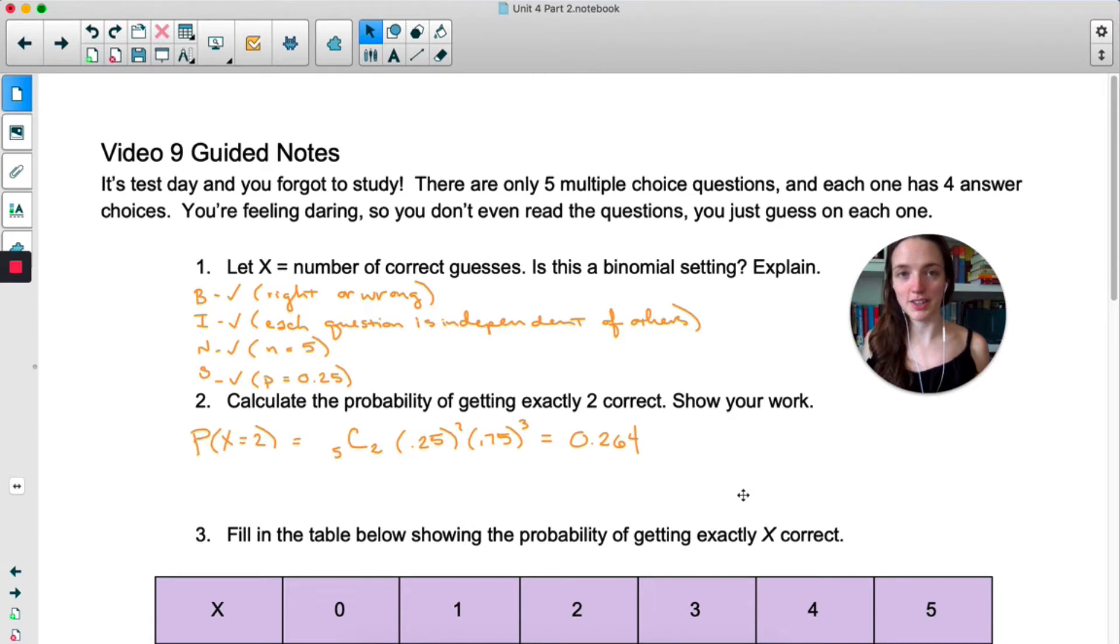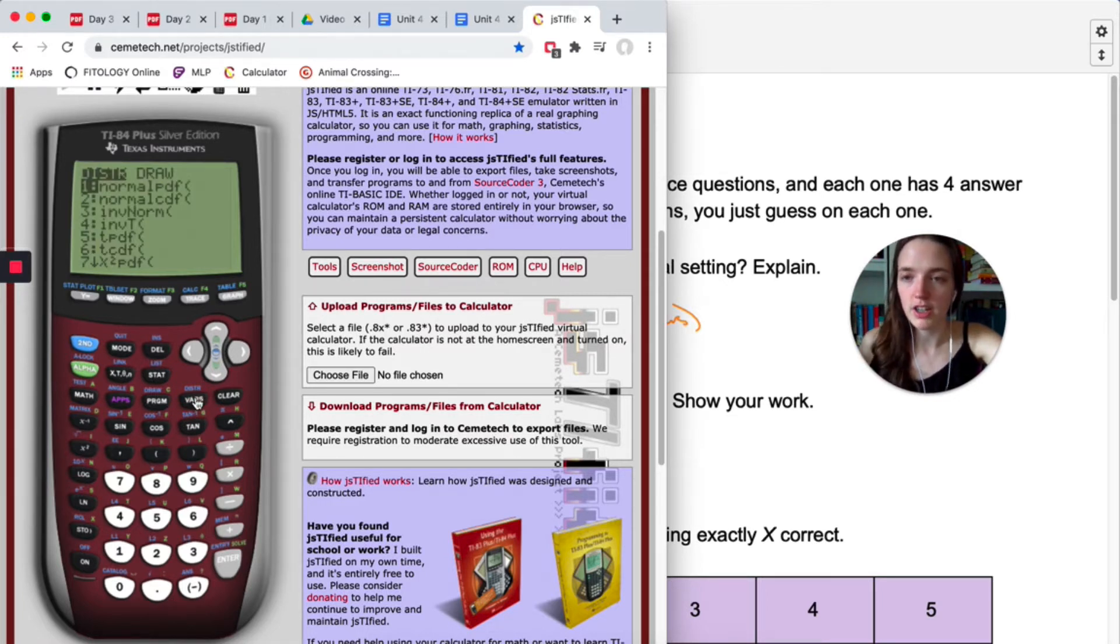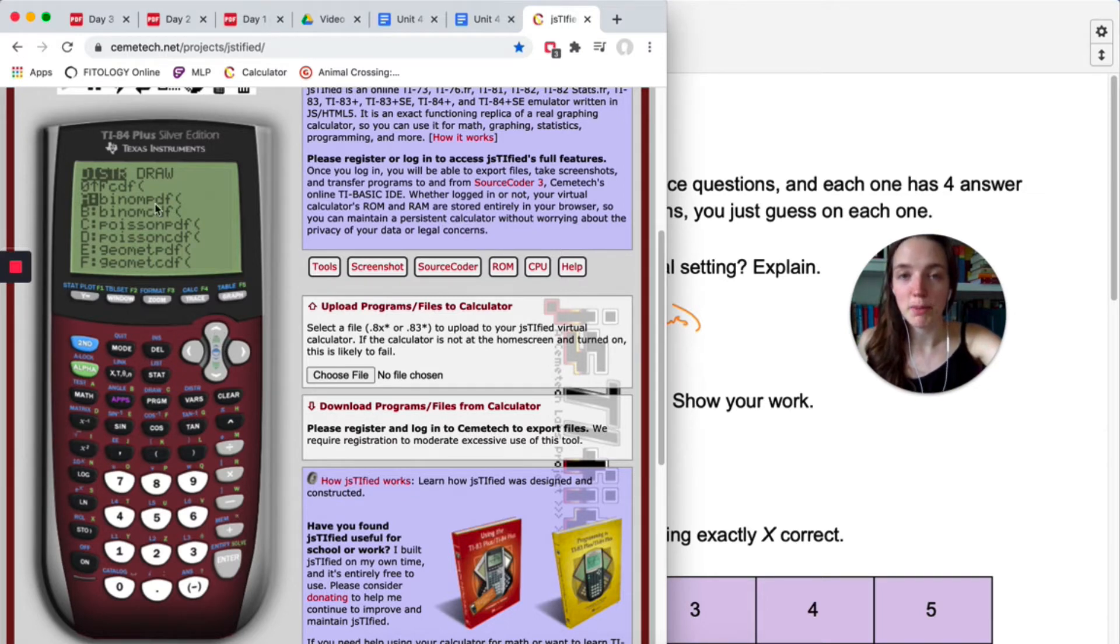All right, I promised a shortcut. So here's the shortcut. On your calculator, we have a function called binom PDF. Let me show you where that is. So it's actually in the same place as norm CDF. You click second and then vars, which says DISTR, so distribution above it. Here's norm PDF and CDF. If we go down towards the bottom of the list, we have binom PDF and binom CDF. Click on binom PDF.